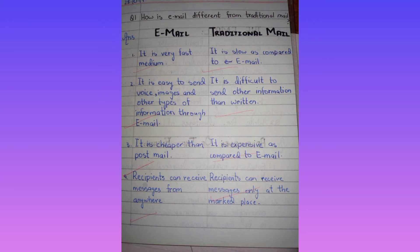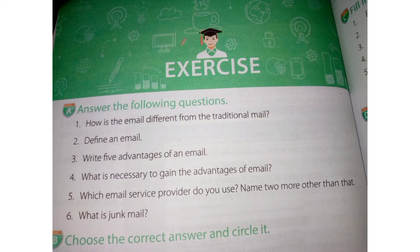Point number four: Recipients can receive messages from anywhere. Spelling of 'recipients': R-E-C-I-P-I-E-N-T-S — write that very carefully. Spelling of 'receive': R-E-C-E-I-V-E. In the Traditional Mail column, write: recipients can receive messages only at the marked place.